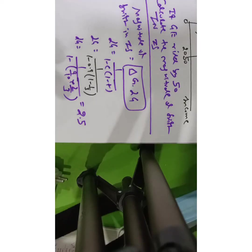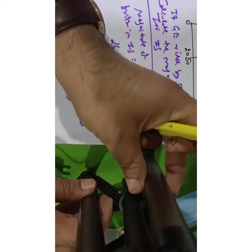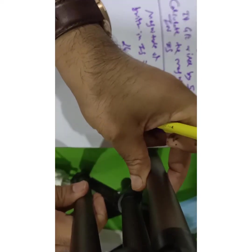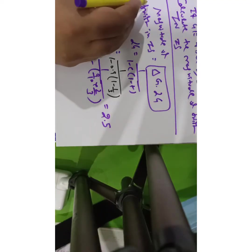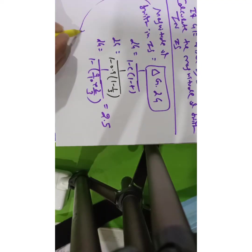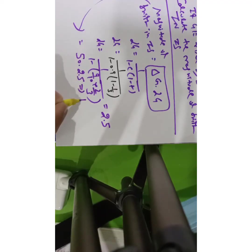That's the multiplier alpha G equal to 2.5. But this is just alpha G. For the magnitude of shift in IS, delta G is 50 and alpha G is 2.5. So 50 times 2.5 equals 125. That is the magnitude of shift in IS.